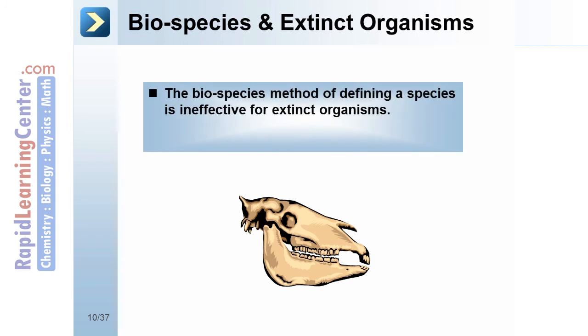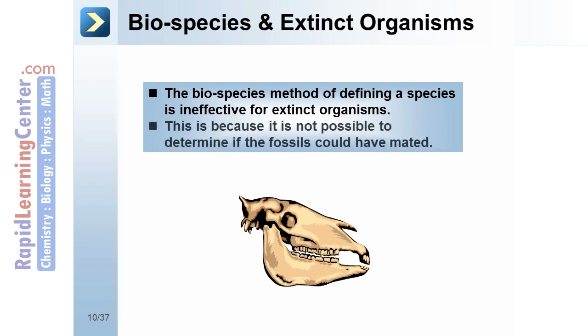The biospecies method of defining a species is also ineffective for extinct organisms, because it is not possible to determine if the fossils could have mated.